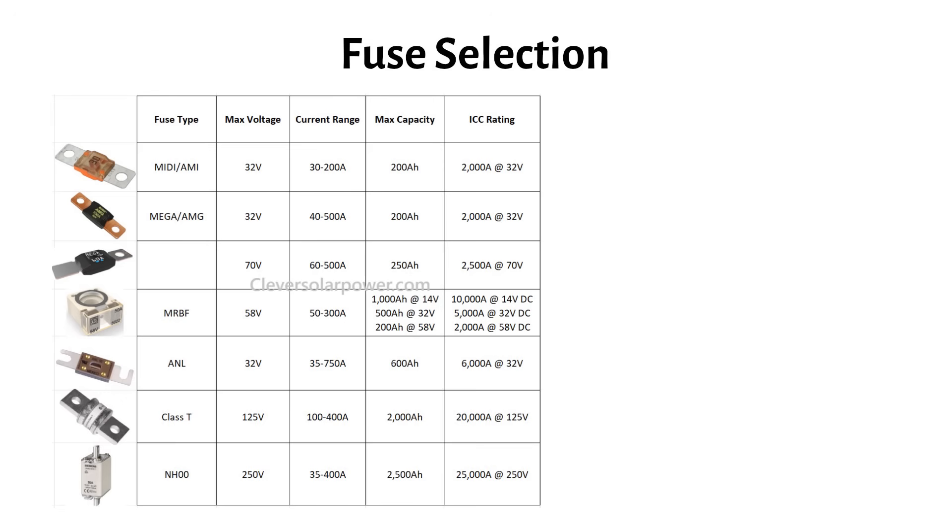Not all fuses are created equal. Here's the biggest mistake I see. People using mega fuses on 48 volt systems. Standard mega fuses are only rated for 32 volts maximum. If you're running a 48 volt system, you need a fuse that can handle at least 60 volts, like a 70 volt rated mega fuse, an MRBF, class T, NH00 fuse or a battery breaker. Using the wrong voltage rating is dangerous and can lead to catastrophic failure.